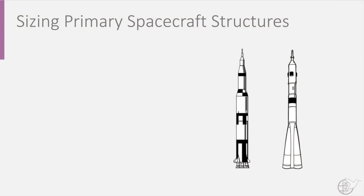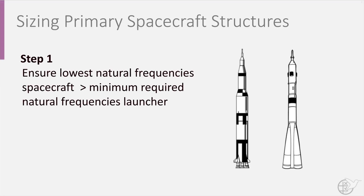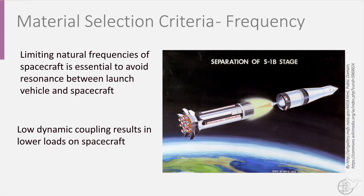To size a primary spacecraft structure, a two-step procedure must be followed. The first step is to ensure that the lowest natural frequency of the spacecraft — a satellite for instance — is larger than the minimum required natural frequency of the launcher. Limiting the natural frequency this way, in both the axial and lateral direction, is necessary to avoid resonance between the launch vehicle and the spacecraft. A second advantage is that having low dynamic coupling also results in lower loads acting on the spacecraft.